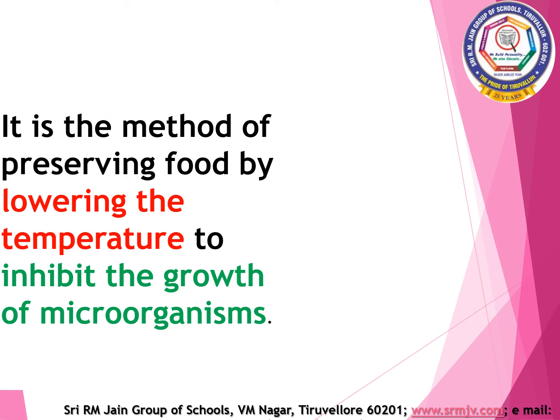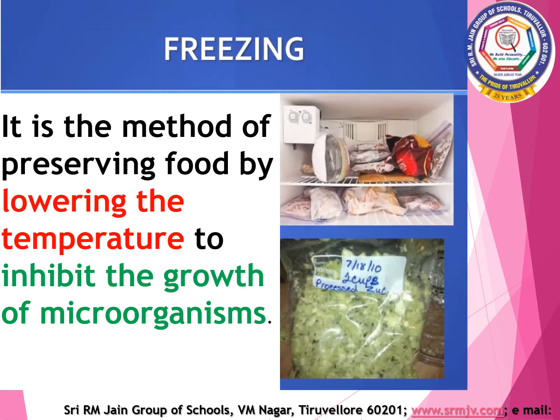Food kept in a refrigerator remains fresh for some days. Microorganisms cannot grow easily in cool places. Let us now discuss about the third method of food preservation, that is freezing. Freezing is a method of preserving food by lowering the temperature to inhibit the growth of microorganisms. Fruits, vegetables, seafood, grains, nuts and eggs are preserved by this method.